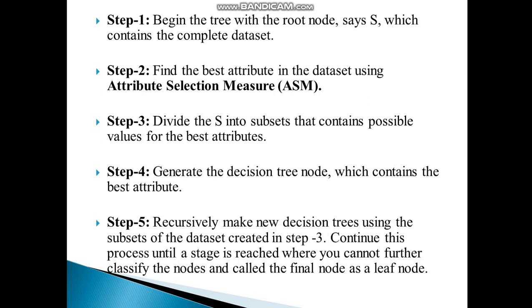Step 1: Begin the tree with the root node, say S, which contains the complete dataset. Step 2: Find the best attribute in the dataset using the Attribute Selection Measure.